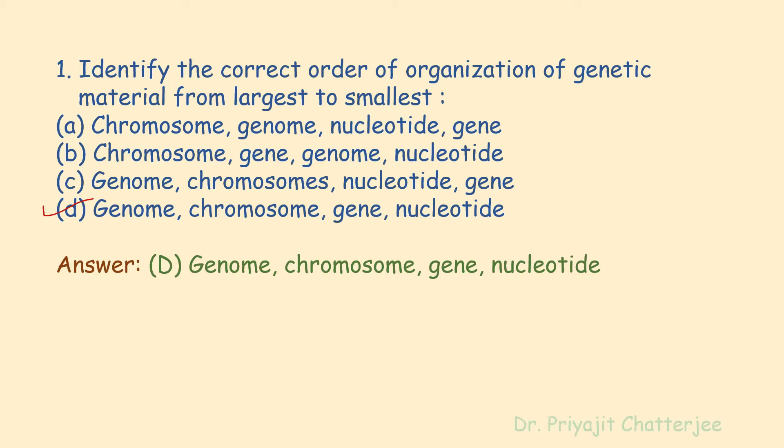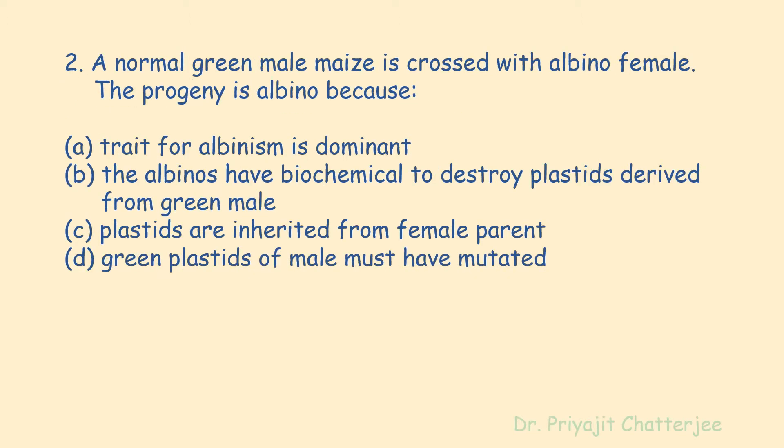The logic: a genome is an organism's complete set of DNA including all of its genes — it is the largest. Chromosomes are thread-like structures located inside the nucleus of animal and plant cells, mainly in eukaryotes. The building blocks of nucleic acids are nucleotides, and a gene is the basic physical and functional unit of heredity. Genes are made up of DNA. Thus the correct answer is option D: genome, chromosome, gene, nucleotide.